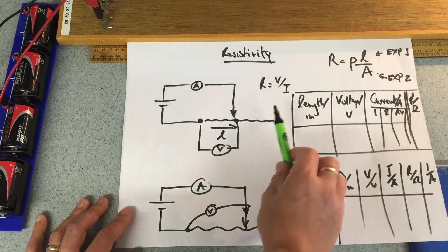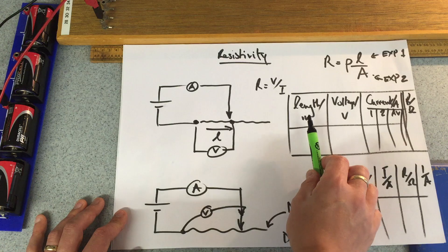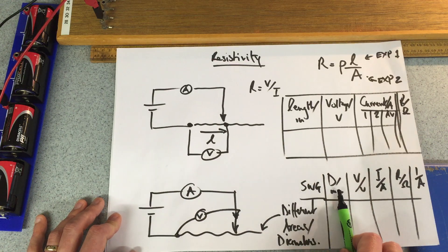So there are the two experiments. One with varying length as our independent variable and the other one will be the diameter.